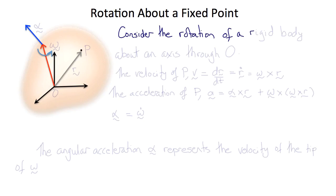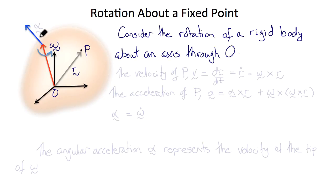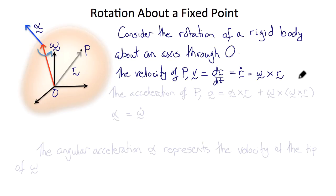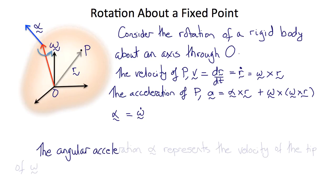Let's consider the general rotation of a rigid body about an axis through the origin O. At a point P with position vector r, the angular velocity is ω and the angular acceleration is α. The velocity of P is v = dr/dt = r-dot = ω × r, and the acceleration is a = α × r + ω × (ω × r), where α = ω-dot. In this most general rotation, the angular acceleration α can be thought of as the velocity of the tip of the angular velocity vector.